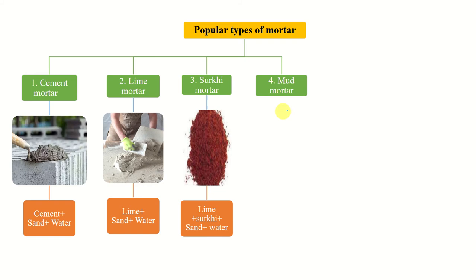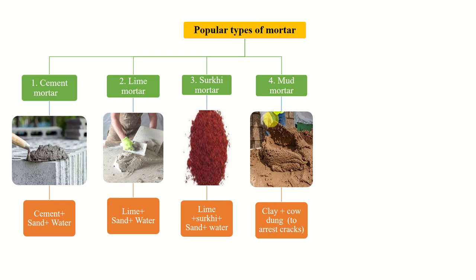Another type is mud mortar. It is prepared by locally available materials. Clay and cow dung are the important ingredients — cow dung is fibrous and it helps to erase the cracks.